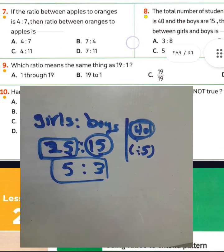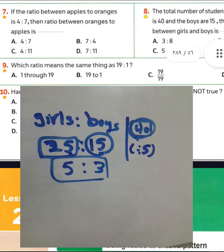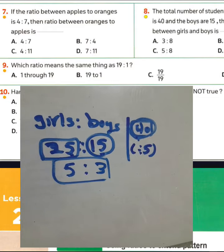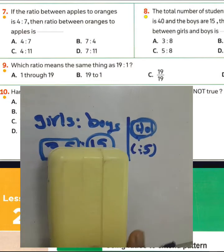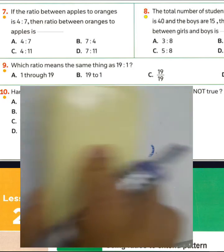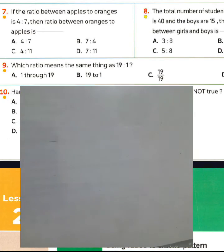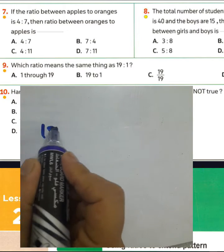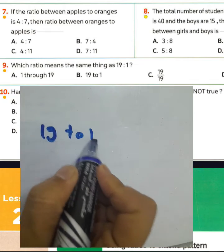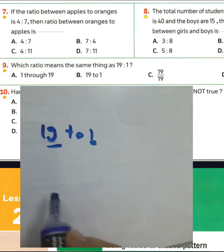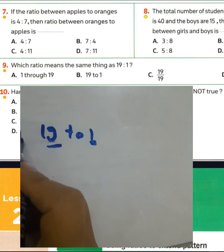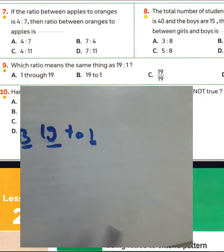Question number 9: which means the same thing as 19 to 1? Choose letter B for question number 9.